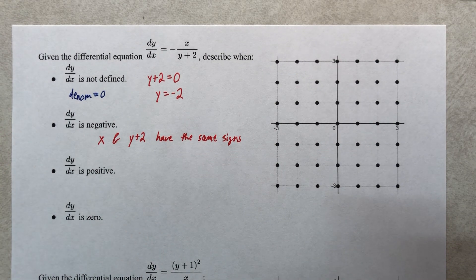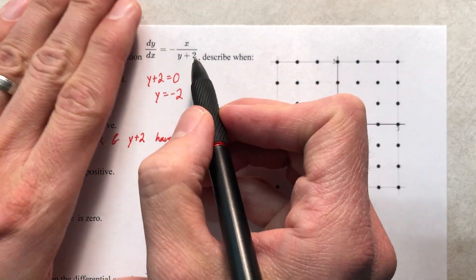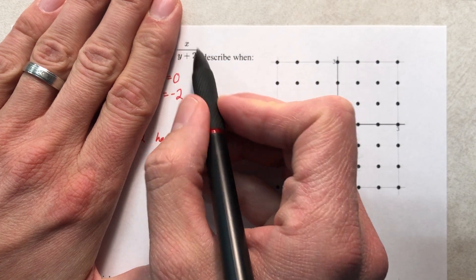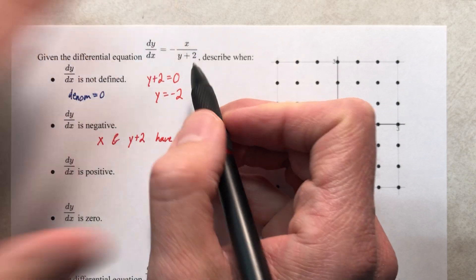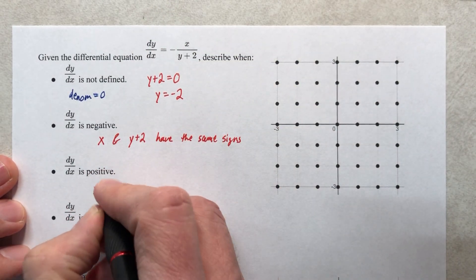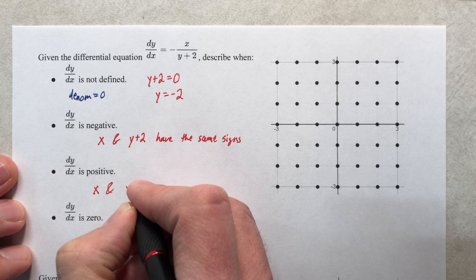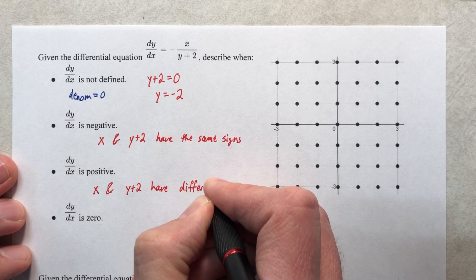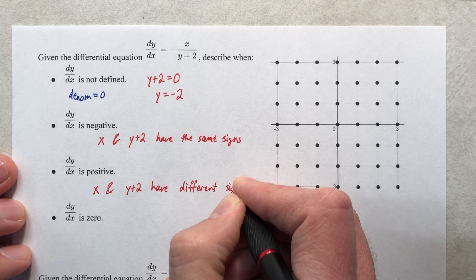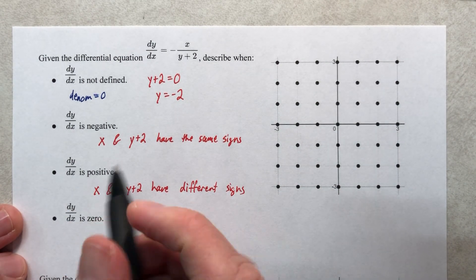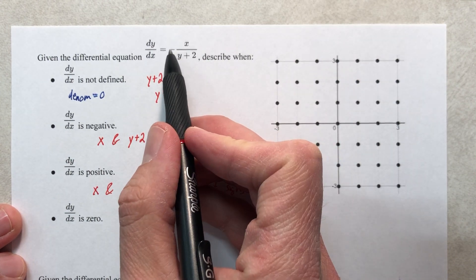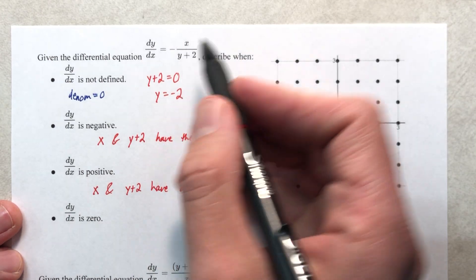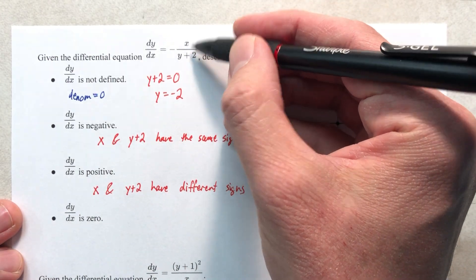What makes it positive? Think again. We have a fraction, and we want this fraction to be negative in order to make the negative negative positive. Therefore, x and y plus 2 would have different signs. What makes the slope positive? The whole thing would have to be positive. So the negative means that'd be a negative as well, making the whole thing positive, which means these would have to be different signs, numerator and denominator.